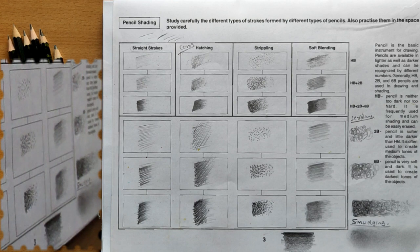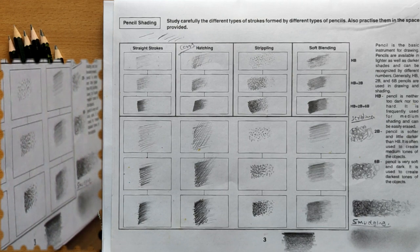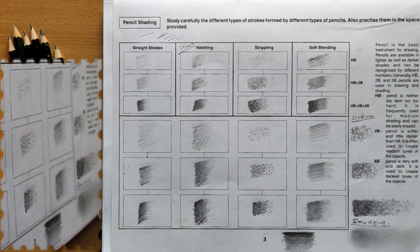These are the different methods of pencil shading: straight stroke method, hatching, cross-hatching, stippling, soft blending, scribbling, and smudging.